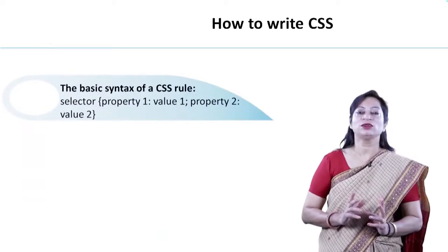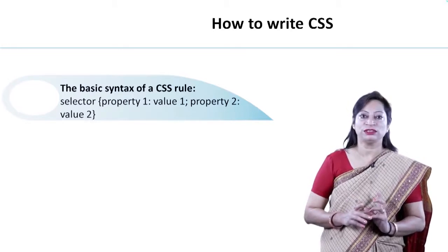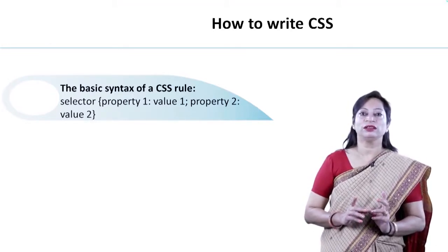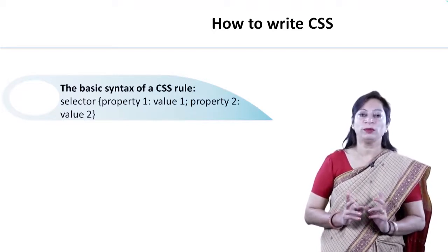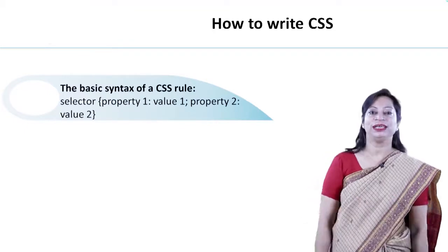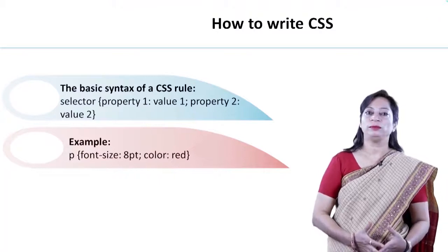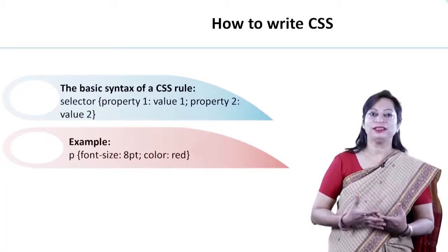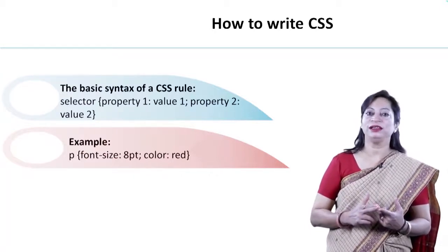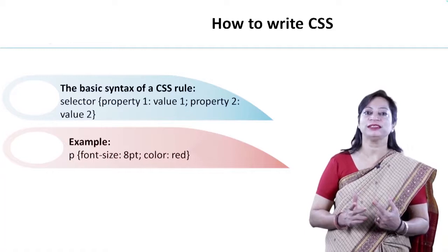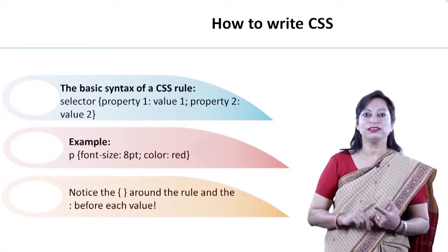The basic syntax of a CSS rule is: we include the selector, then property 1, colon, value 1. In the same way, we can use other properties and values. In this example, p is a selector; font size and color are properties; and 8pt and red are the values of the font size and color properties. We have to include curly braces around the rule, and a colon is used before each value.